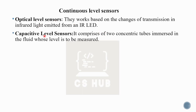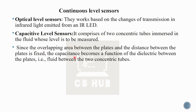Capacitance level sensors comprise two concentric tubes immersed in the fluid whose level is to be measured. Since the overlapping area between the plates and the distance between the plates is fixed, capacitance becomes a function of the dielectric between the plates — that is, the fluid between the two concentric tubes. The three factors affecting capacitance are: area, distance between plates, and dielectric.